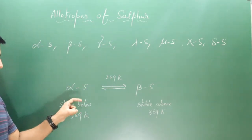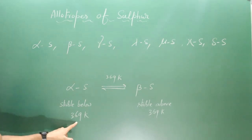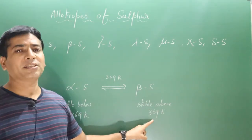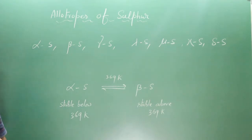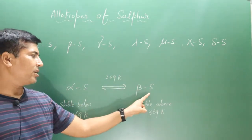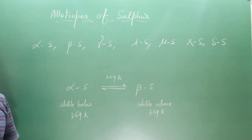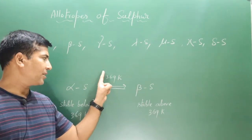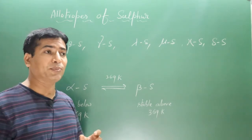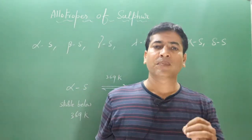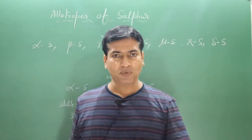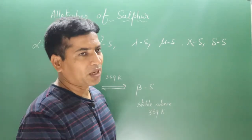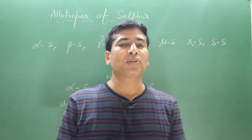If we increase the temperature above 369 Kelvin, alpha sulfur converts into beta sulfur. And if we decrease the temperature below 369 Kelvin, beta sulfur converts into alpha sulfur. At this temperature both forms are interconvertible, so this temperature is known as the transition temperature — the temperature at which alpha sulfur and beta sulfur are in equilibrium. This is a small introduction about allotropes of sulfur; now let's discuss them one by one.